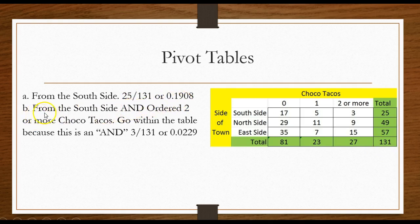Now what about this? What is the probability that a customer was from the south side and ordered two or more Choco Tacos? South side and three. That's saying if I randomly pick somebody, what is the probability that they are from the south side and got two or more. That would be three out of 131.